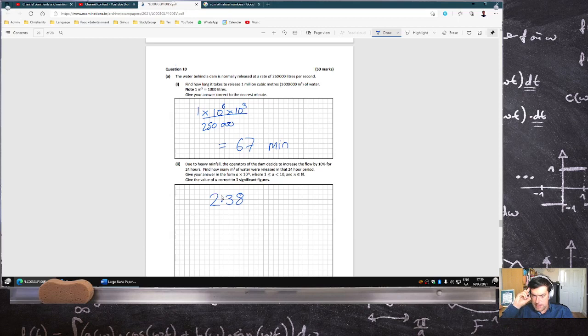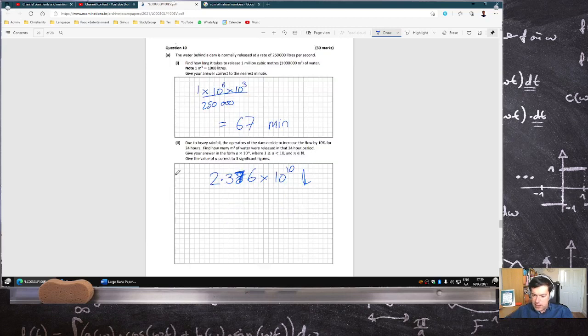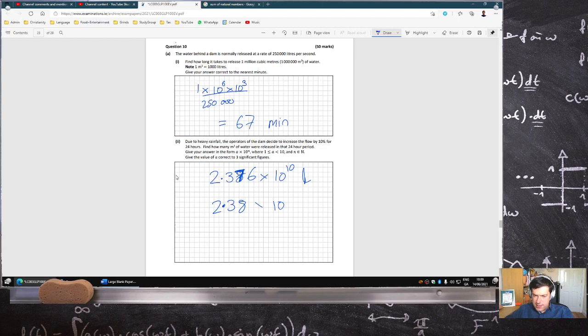That's liters. And they want it in meters cubed. So I got 2.376 times 10 to the 10 liters. So to make that meters cubed, I'll have to divide by 1,000. So that would be 2.38 times 10 to the 7 liters cubed.